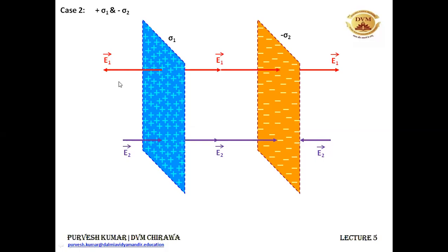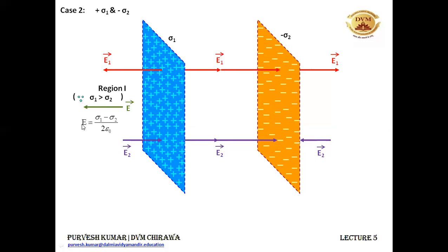These two electric fields are canceling each other. Since sigma 1 is greater than sigma 2, the net electric field will be in the direction of E1 only because E1 will be greater than E2. But the net electric field will be the difference of these two — the magnitude will be the difference of E1 and E2 because they are acting in opposite directions.